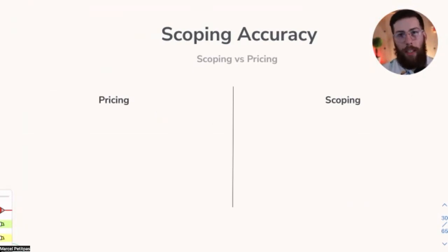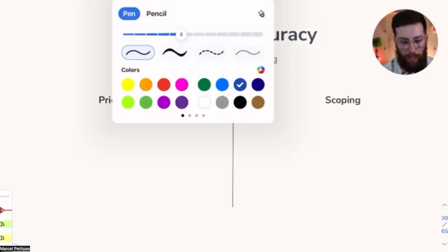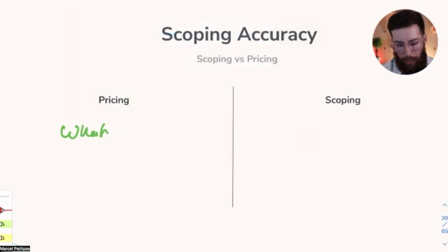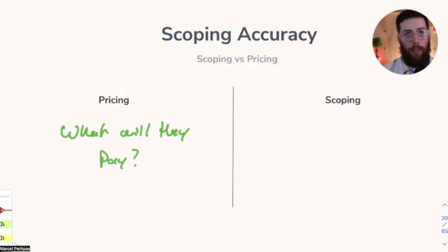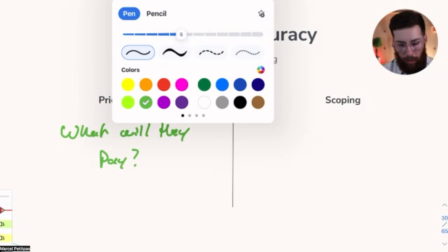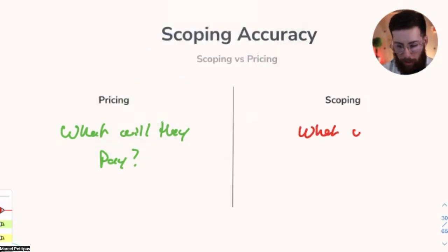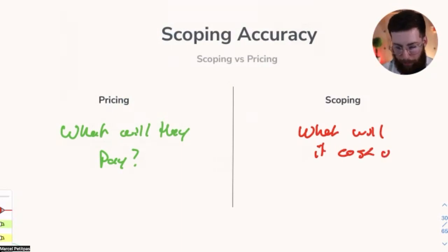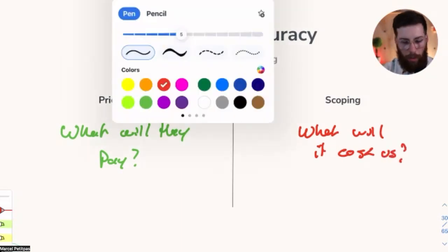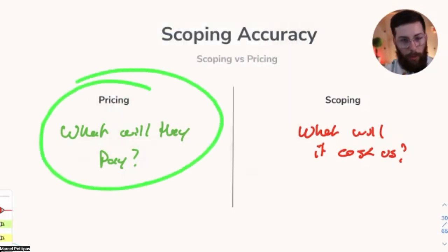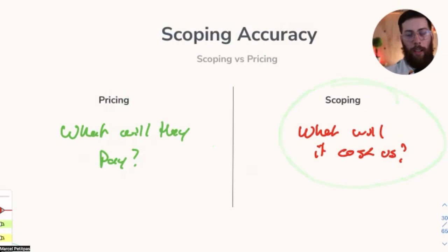When we price something, we are answering the question: what will the client pay? This is understanding the amount of money we're going to get in exchange for a certain set of promises or deliverables. The scoping question is about what will it cost us. The clear differentiation is that pricing is about the client and scoping is about us.